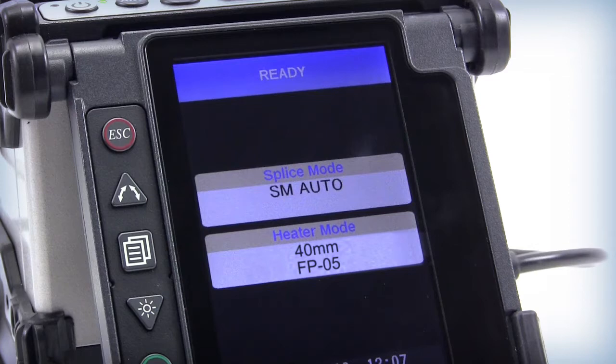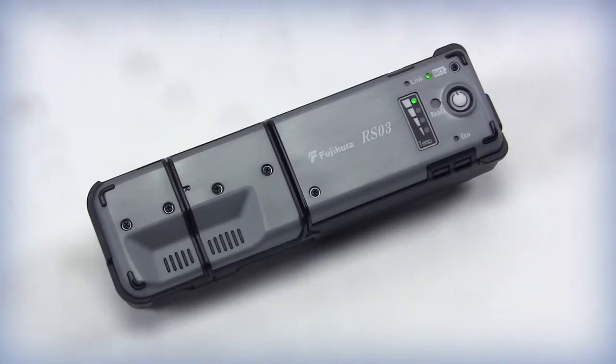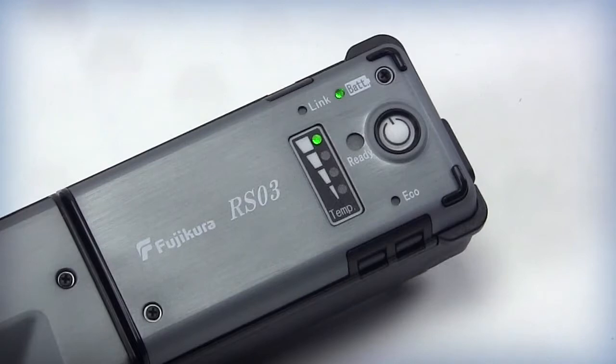The heater needs to be set for the appropriate 40mm 12 fiber mass splice protection sleeve. A high heat setting on the thermal stripper is recommended for stripping spiderweb ribbon. The setting that is correct on the RS03 is number 4.